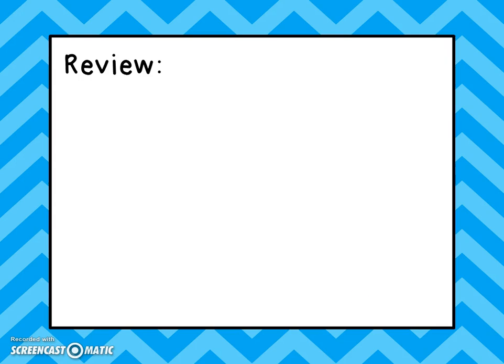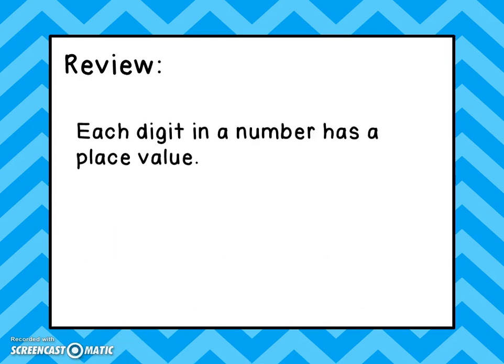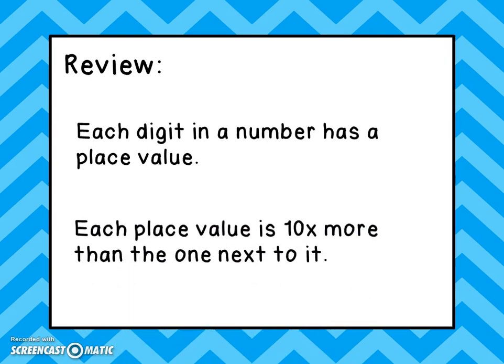Let's review. Each digit in a number has a place value — where it's located tells you how much that digit is worth. And each place value is ten times more than the one next to it. Again we have the ones, then the tens — that's ten times more — then the hundreds, that's ten times more than the tens, then the thousands, so that's ten times more than the hundreds.